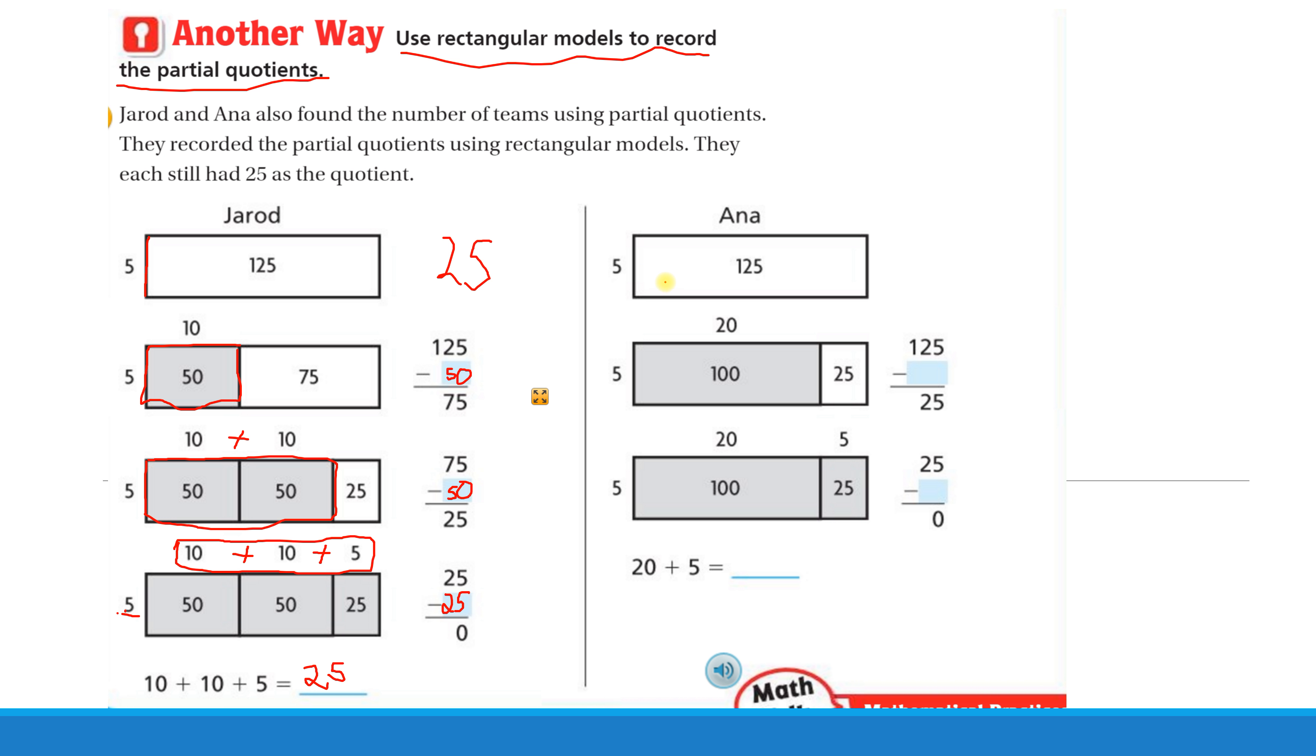Okay, Anna did it a little bit differently, but she still got the same answer. And like we talked about, people think in different ways. And any strategy that's going to get you the correct answer is going to be a good strategy, as long as you are getting the correct answer with that strategy. So let's see what Anna did.